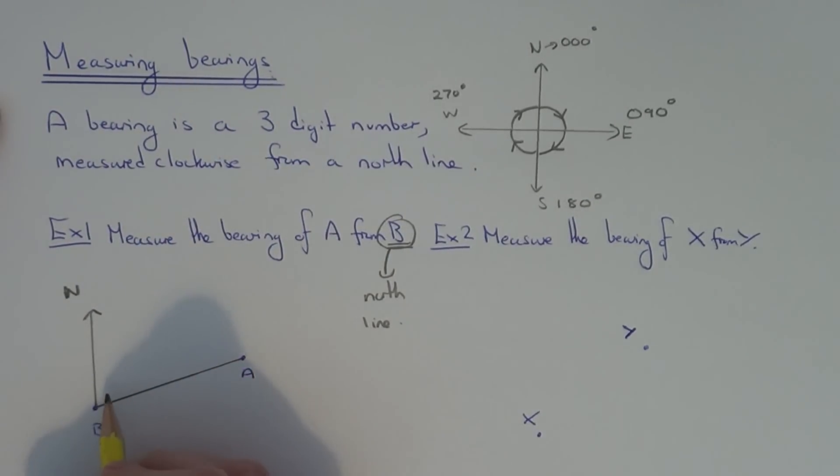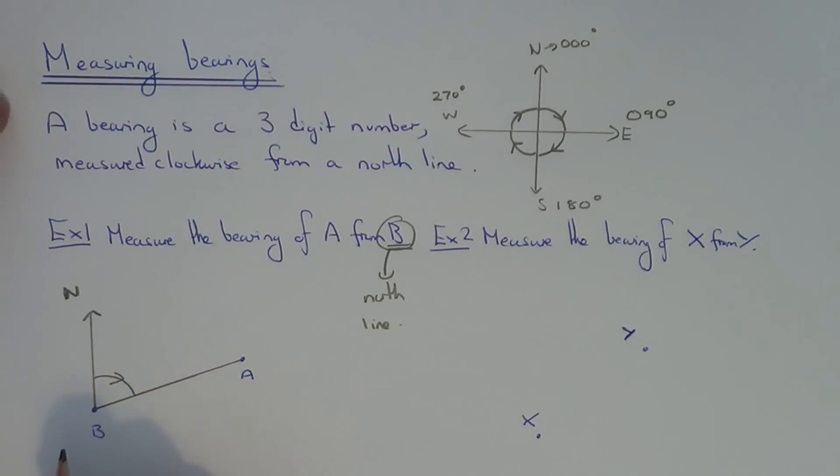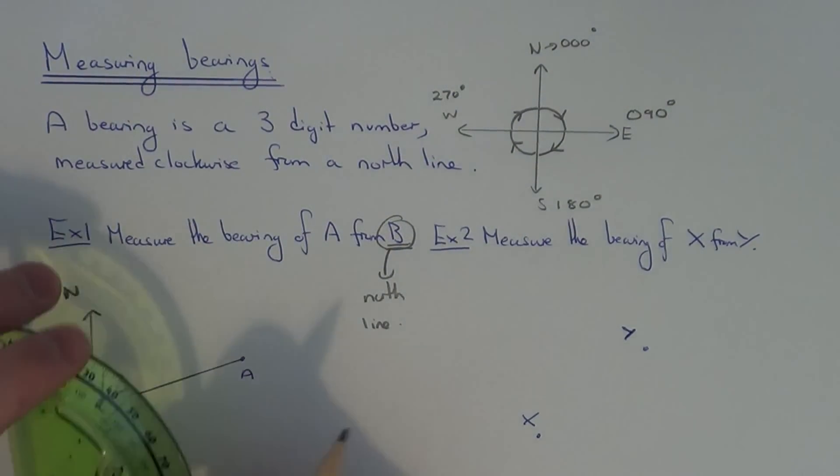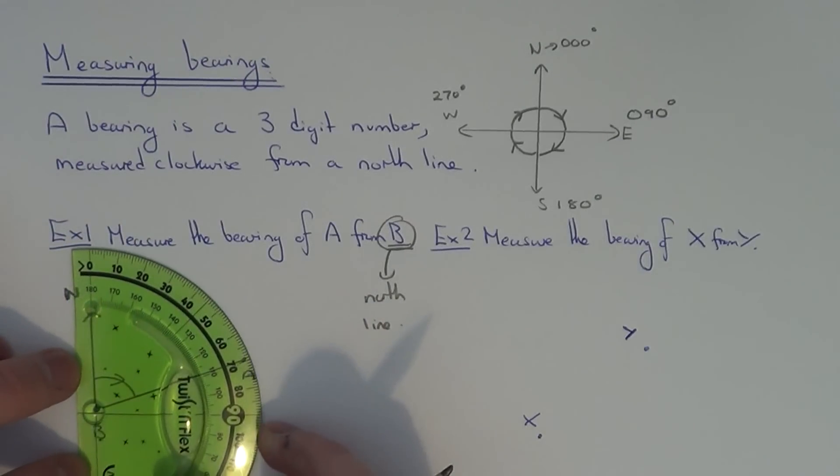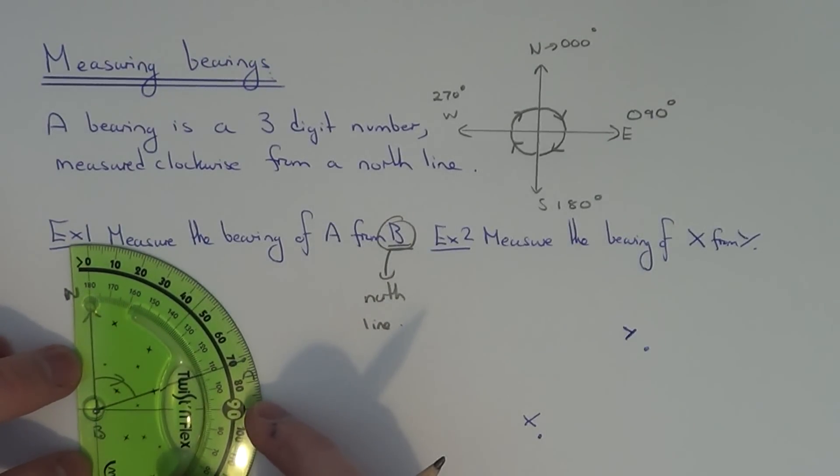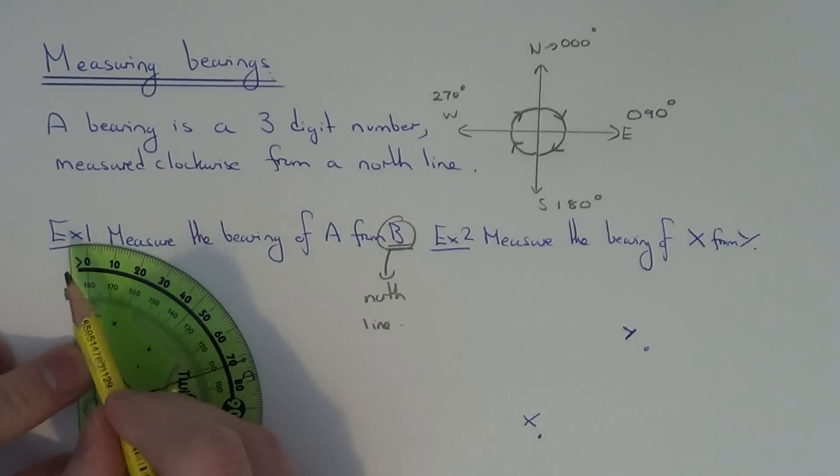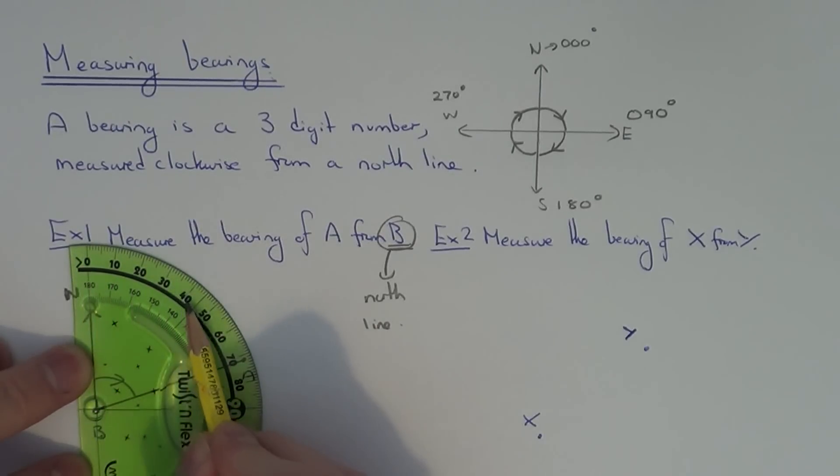And marking the angle which we're going to measure. So remember we start on north and go around clockwise. If you get your protractor put zero on the north line. And we've just got to measure it around clockwise. Which gives us an angle of 72 degrees.